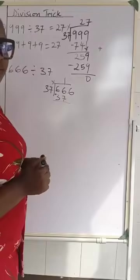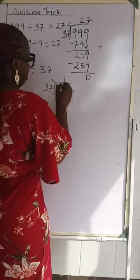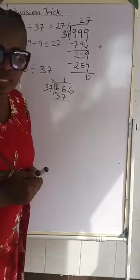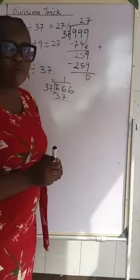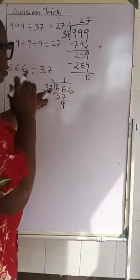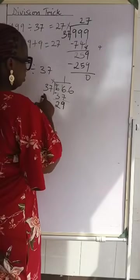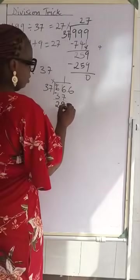6 take away 7, it cannot go. So we are borrowing 1 from here. This will remain as 5. I will add 1 here. It is now 16. 16 take away 7 is 9. You put your 9 here. Then you are left with 5 up there. 5 take away 3 is 2. Since it is smaller, we bring down our 6.